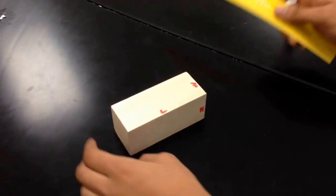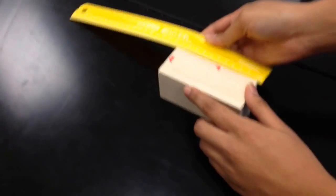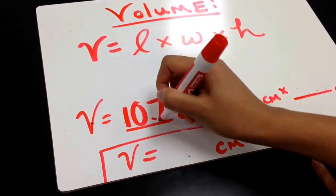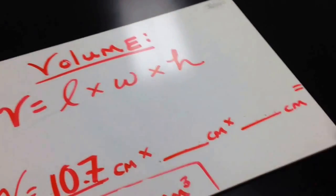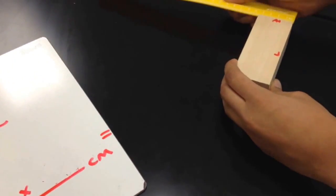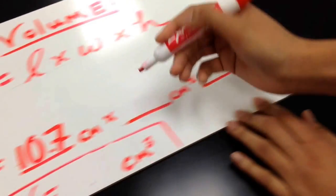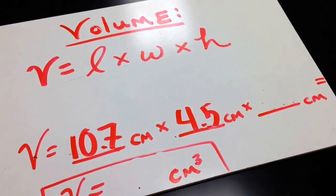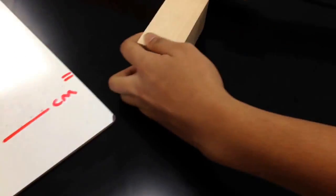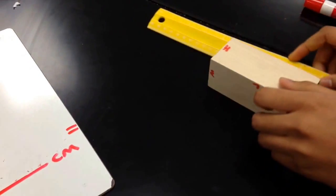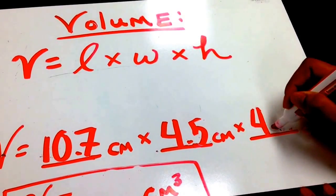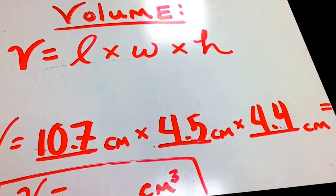First we measure the object's length and we find the length to have the measurement of 10.7 centimeters. Next, measure the object's width and we find the width of the object to be 4.5 centimeters. And finally we measure the height of the object and we find the height to be 4.4 centimeters.